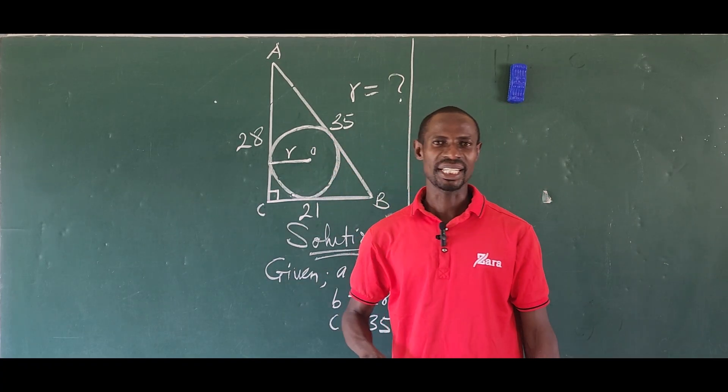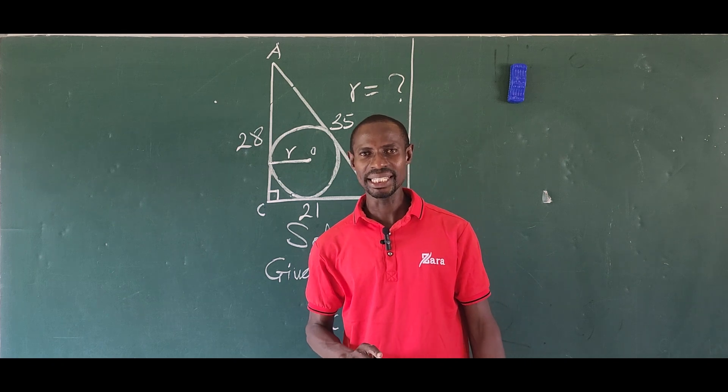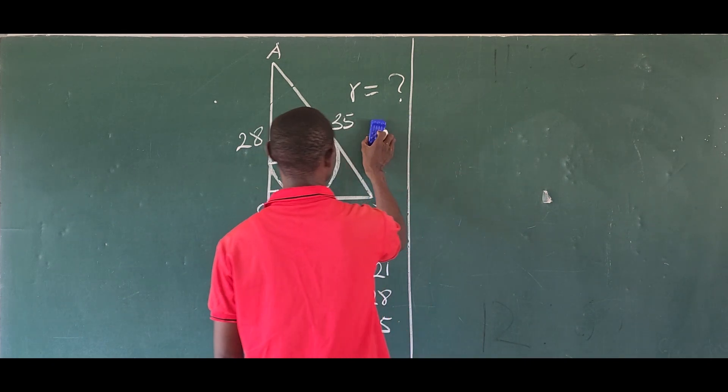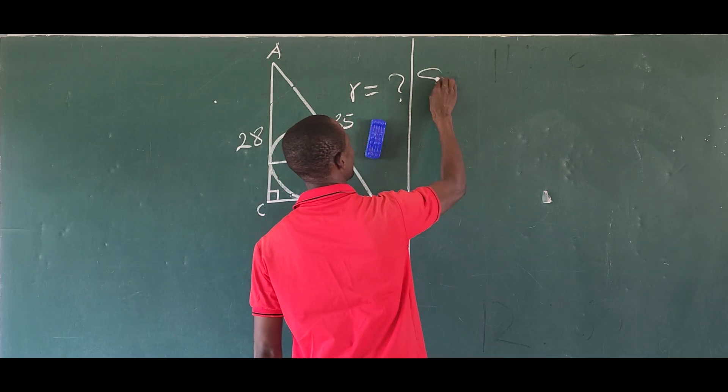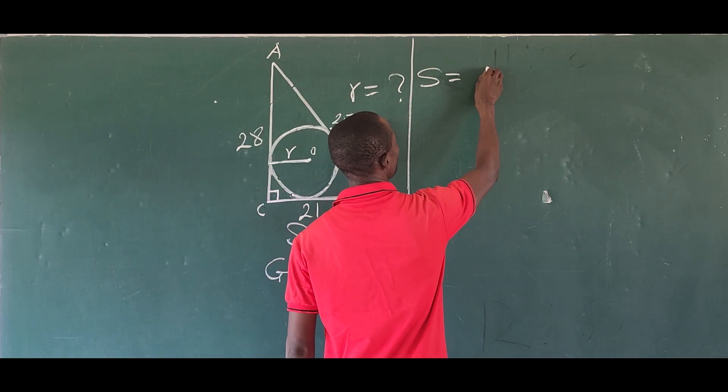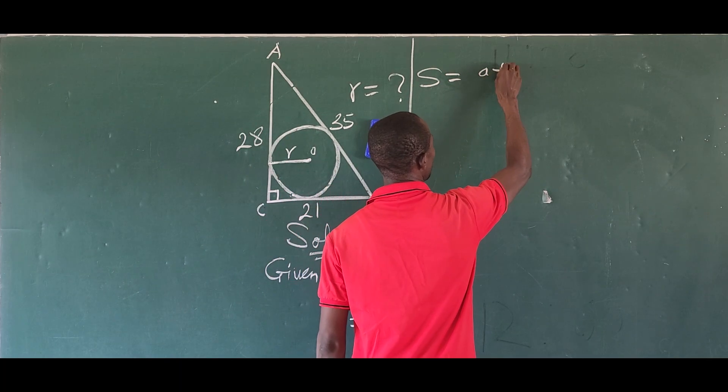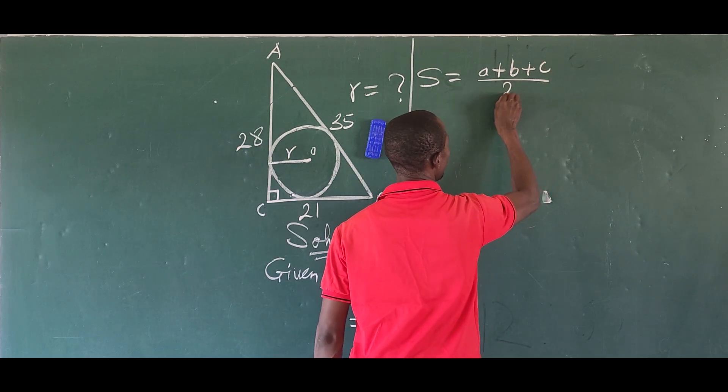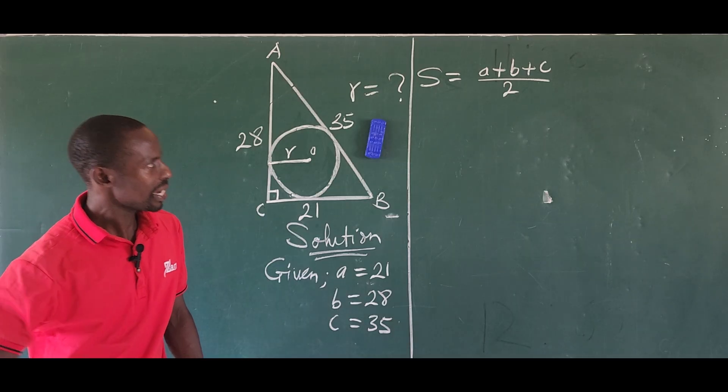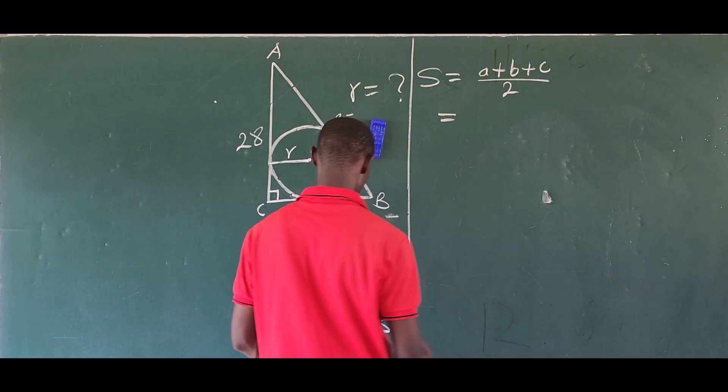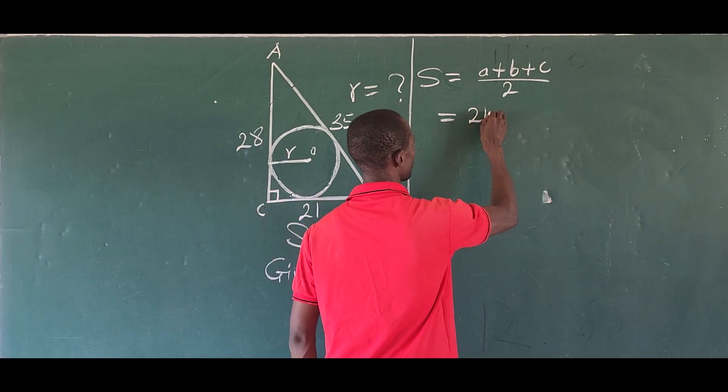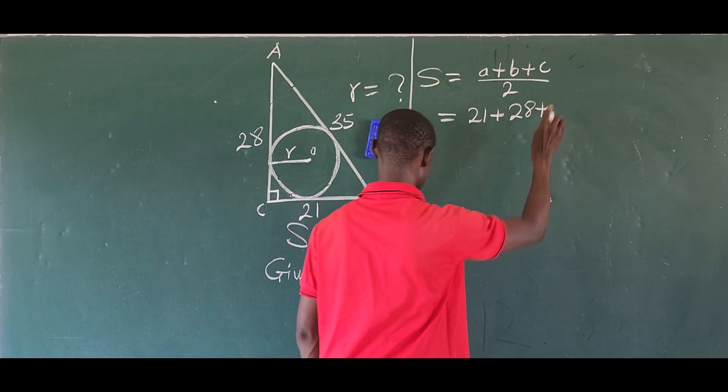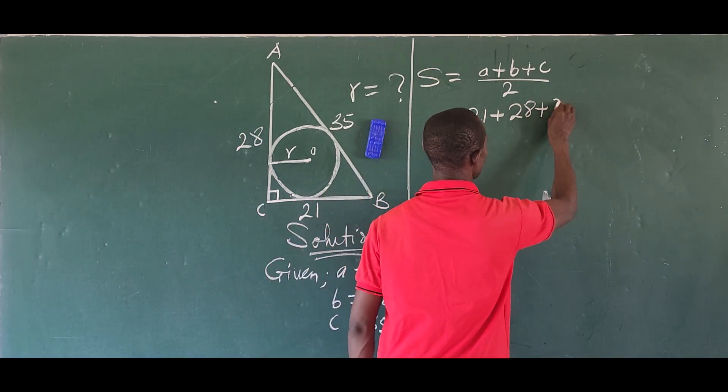First of all, let's find our s, which is the semi-perimeter. We have s equals (a + b + c) / 2. This is the formula for our semi-perimeter. So let's substitute.